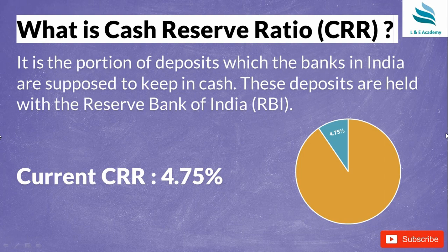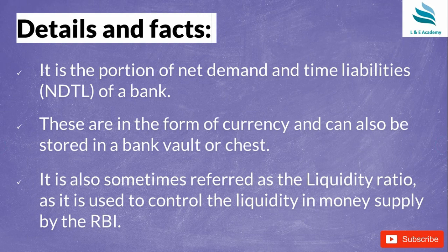Out of every hundred rupees which a bank has, the bank needs to keep 4.75 rupees with RBI. The motive is to save the banks in a crisis. If the banks don't have enough money to pay their lenders because of a financial crisis, this reserve will be used by RBI to protect the deposits of the customers and save the bank.